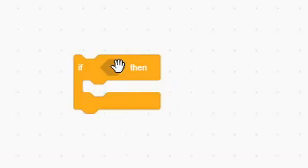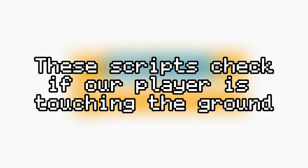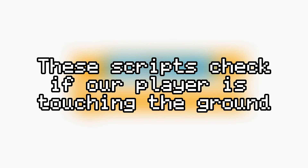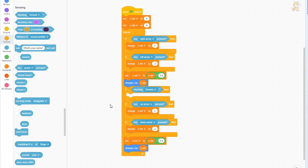Bring out an if condition, and inside of that, put a touching wall block. These scripts we just made check if our player is touching the ground. Now put this inside of the forever loop, right under the change x by block.